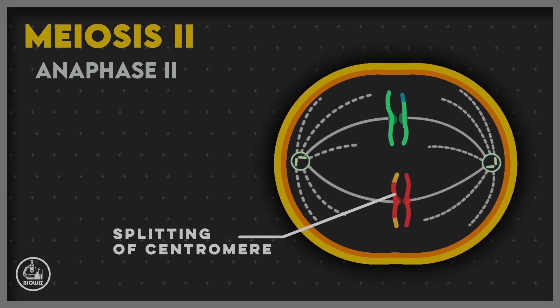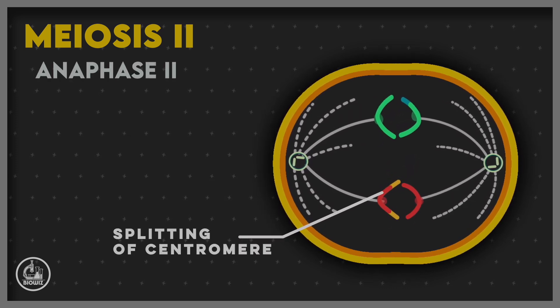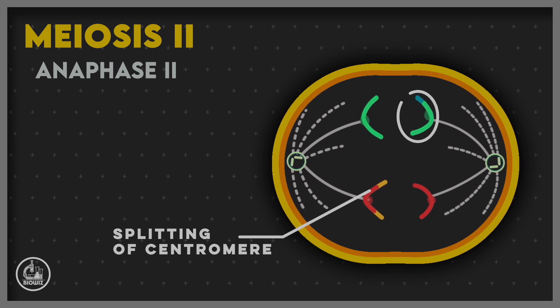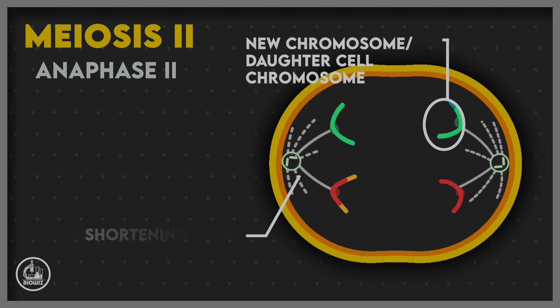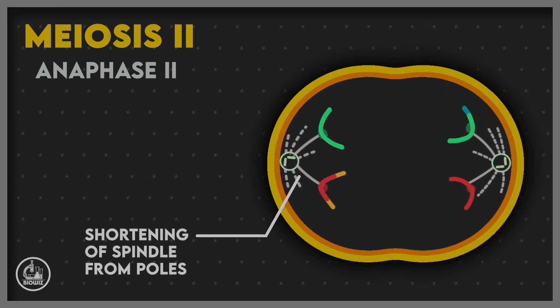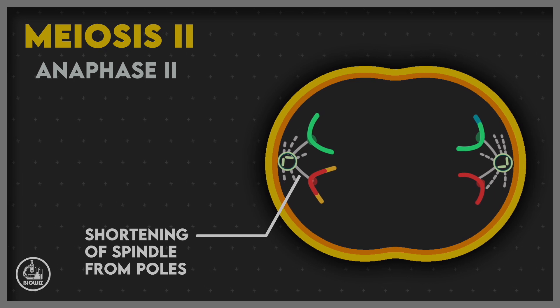In anaphase II, centromeres split due to shortening of spindles from centrosome ends, and separated chromatids start moving towards poles. As a result, the number of chromosomes moving towards each pole remains the same.